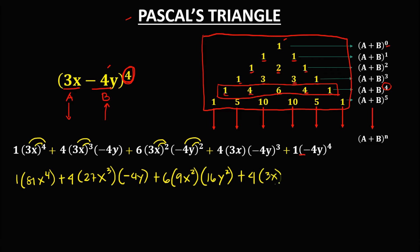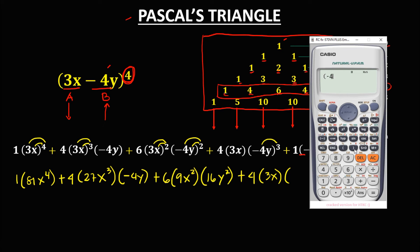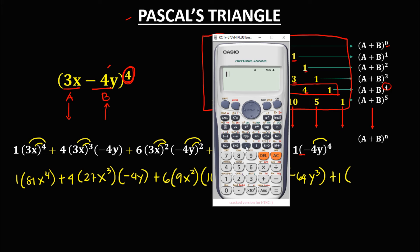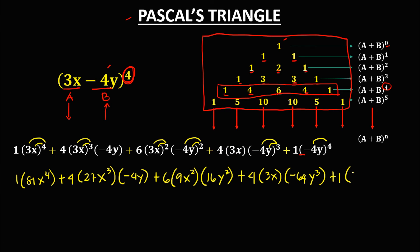Then plus 4 times 3x times negative 4 to the power 3. Take note: if the number is negative, you need to put that inside the parenthesis. Negative 4 to the power 3 equals negative 64, then y to the power 3, then plus 1 times negative 4 to the power 4 — that's 256 — then y to the power 4.